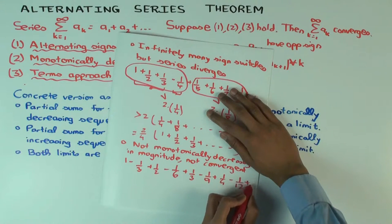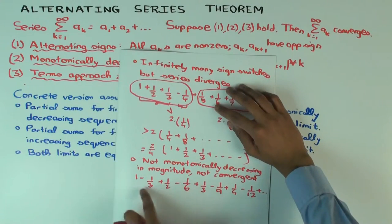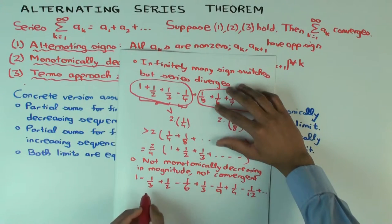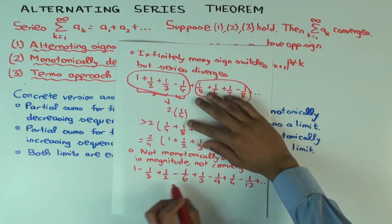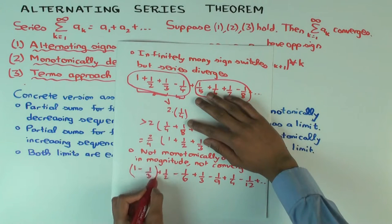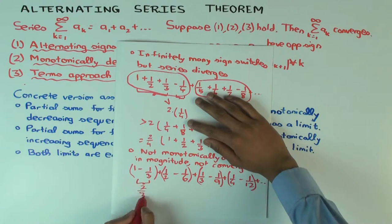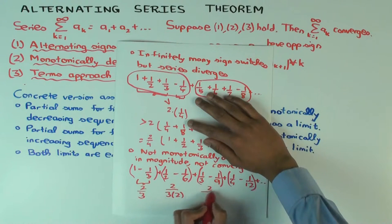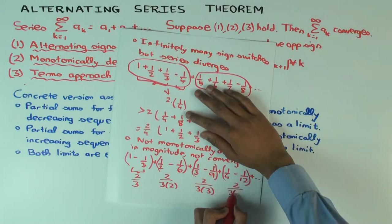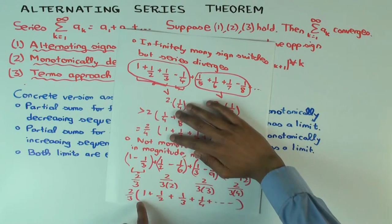Consider: one minus one-third plus one-half minus one-sixth plus one-third minus one-ninth plus one-quarter minus one-twelfth. The signs are alternating, and the terms approach zero, but they're not monotonically decreasing in magnitude. I claim this sum doesn't converge. If you group the terms in pairs, the original sum converging would imply the grouped sum converges too, since this just picks out the even-numbered partial sums. Each pair equals two-thirds times one-half, two-thirds times one-third, two-thirds times one-quarter — so this is two-thirds times (one plus one-half plus one-third plus one-quarter...), which diverges.